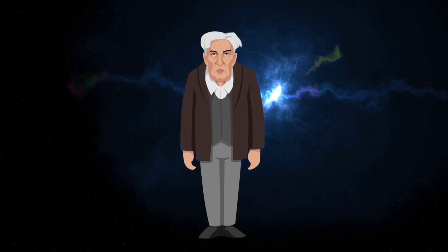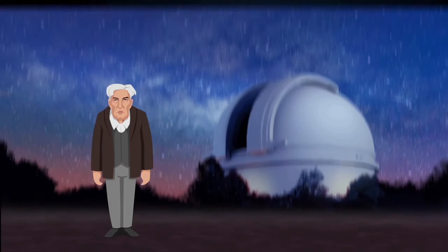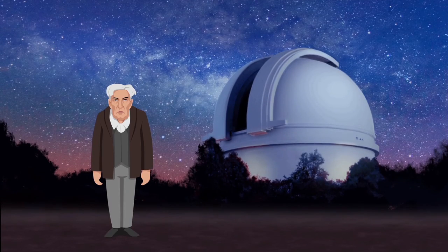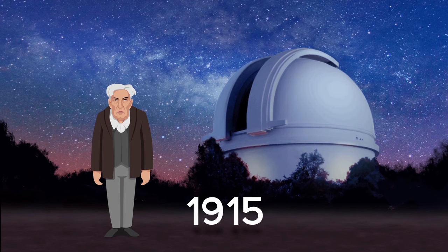The Scottish astronomer Robert Innes, who at that time was the director of the Union Observatory in Johannesburg, South Africa, discovered it in 1915.